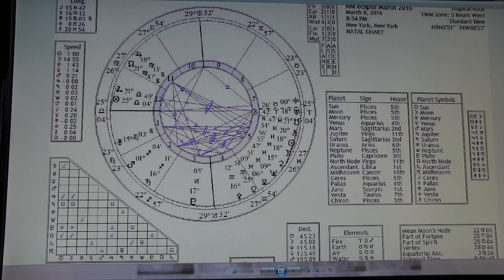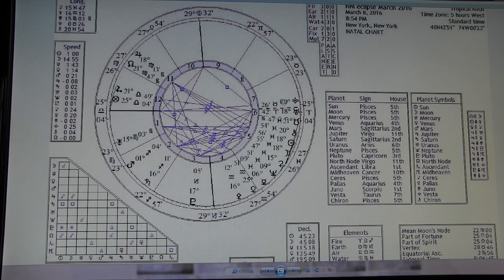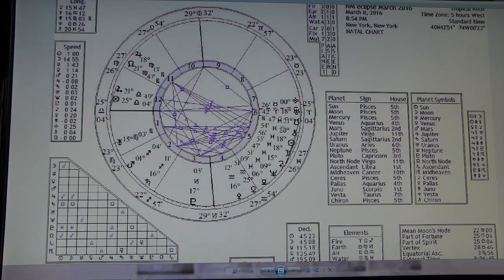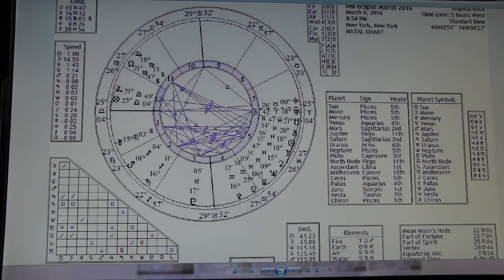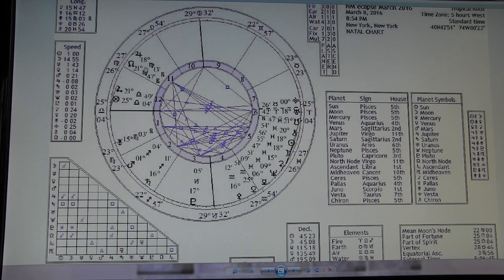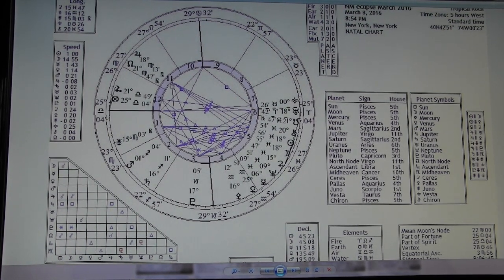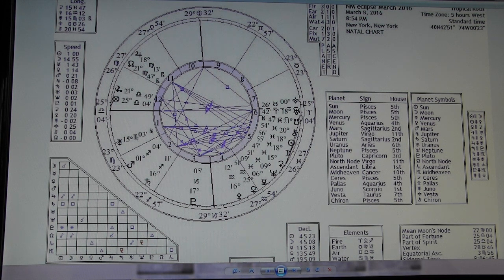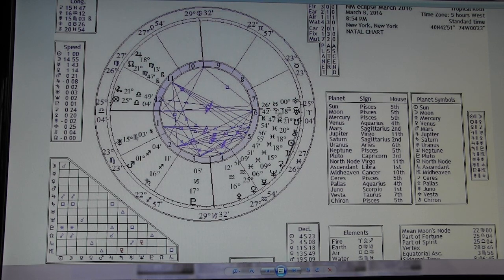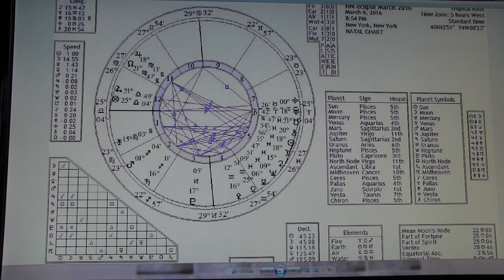This Virgo energy is going to be nice to ground us in all this, because this can just be too much. Sometimes you can be too dreamy and kind of out of it and not able to get your feet on the ground. So that's why this Jupiter and the node together is so nice. I feel like it's going to help us get grounded, help us take these big dreams.